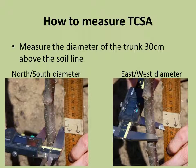We start by measuring the diameter of the trunk in the north-south direction and the east-west direction at 30 centimeters above the soil line.